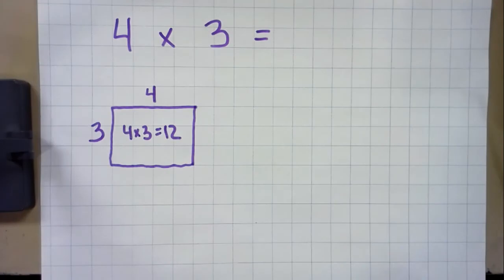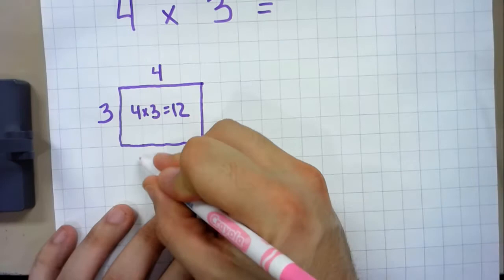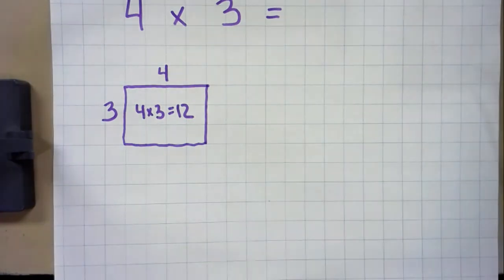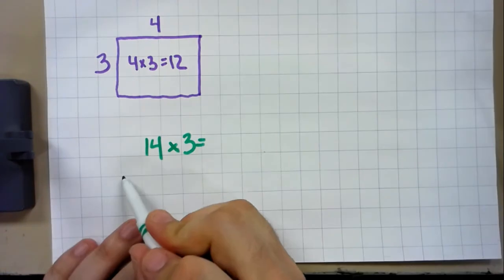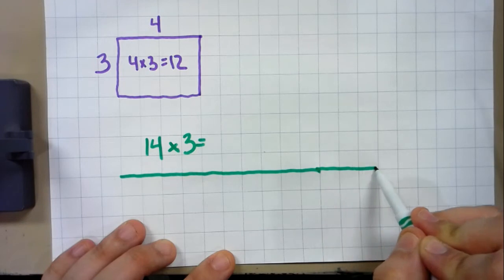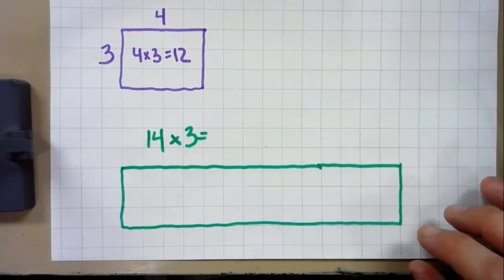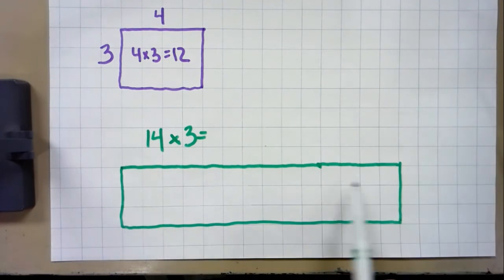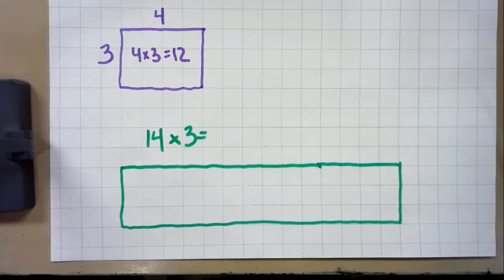We can also use this same skill to visualize larger multiplication problems. That was one-digit by one-digit, but I can also use graph paper for two-digit by one-digit. Let's say I had 14 times three. I can draw a rectangle that's 14 units wide by three units tall. The problem is, how does this help me? I could just do 14 plus 14 plus 14, or three added 14 times, but those don't seem very efficient.